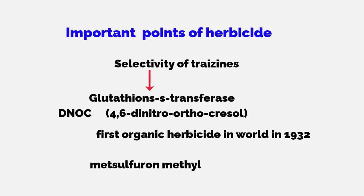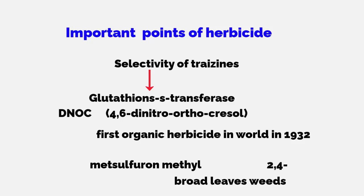Nowadays we are using metsulfuron methyl, which is a very effective broadleaf weed killer. If you want to substitute 2,4-D, you can use metsulfuron methyl instead, because it is the best substitute for 2,4-D.